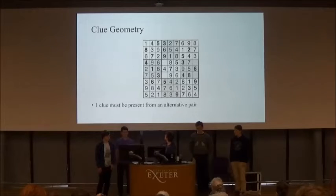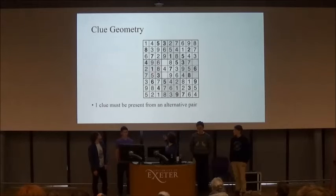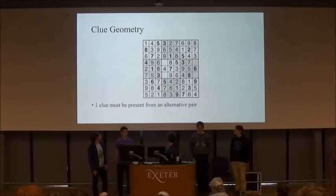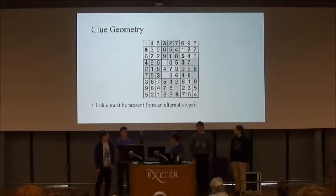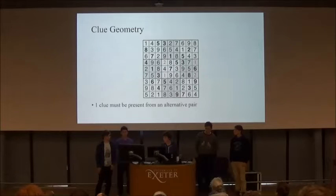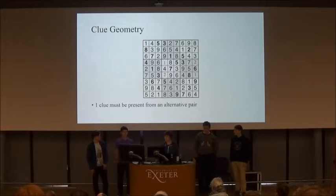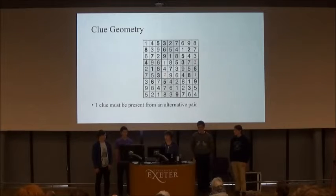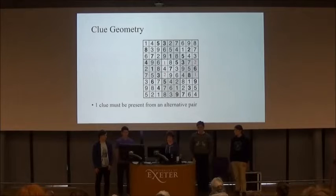For example, in this grid there is a 1 and a 2 missing from these rows, a 1 and a 2 missing from these columns, and a 1 and a 2 missing from these 3x3 squares — which means you can arrange it one way or the other. It doesn't matter which way round you arrange it, because in both scenarios there will be a 1 and a 2 in each row, column, and 3x3 square.